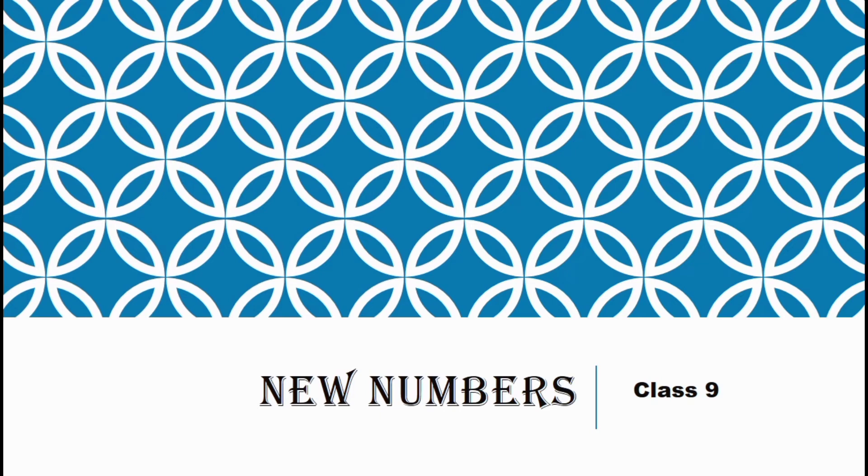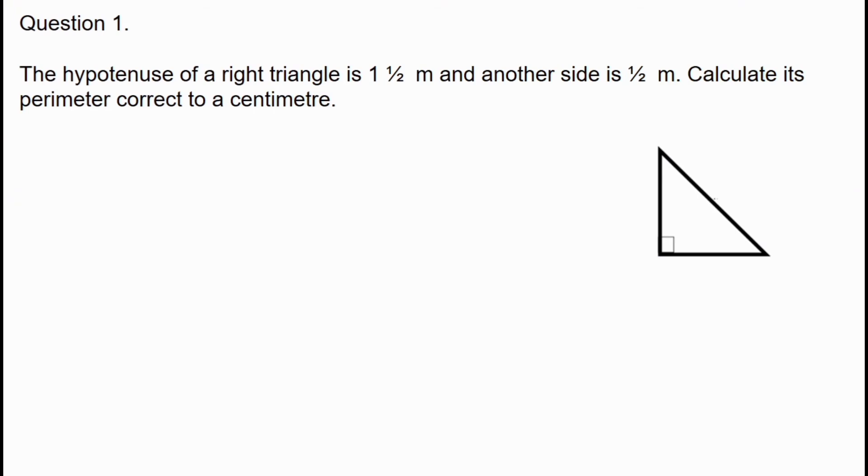Hi, welcome back to our YouTube channel. The hypotenuse of a right triangle is one and a half meters and another side is half a meter. Calculate its perimeter correct to a centimeter.